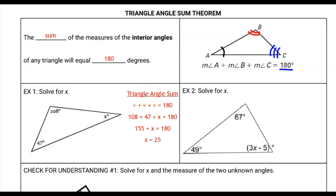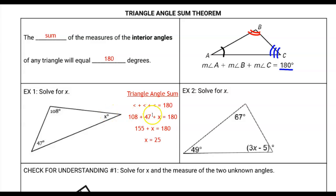In the first example, you could have figured out that these three angles all sum to 180 degrees. The way we write out these problems is: first identify the concept or theorem being used, then write out a formula to fill in. For the triangle sum theorem: angle plus angle plus angle equals 180. We substitute in 108, 47, and x, then solve for x. Remember: identify the theorem, write the formula, fill it in, and solve.